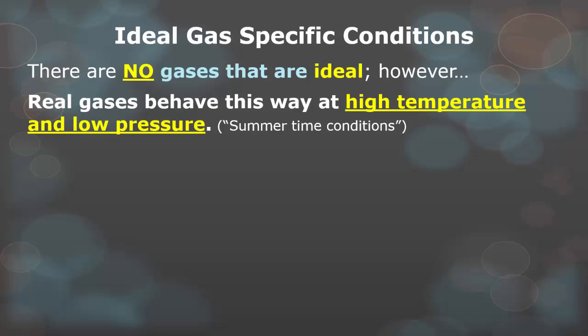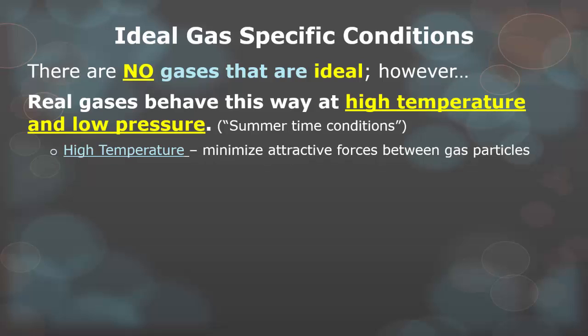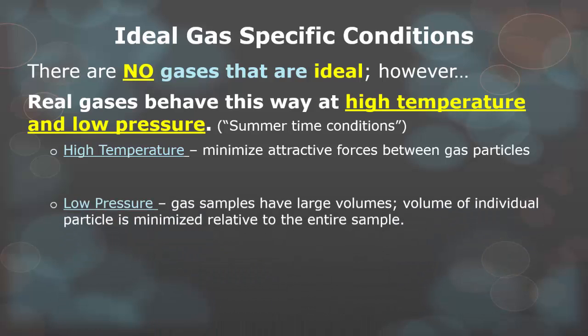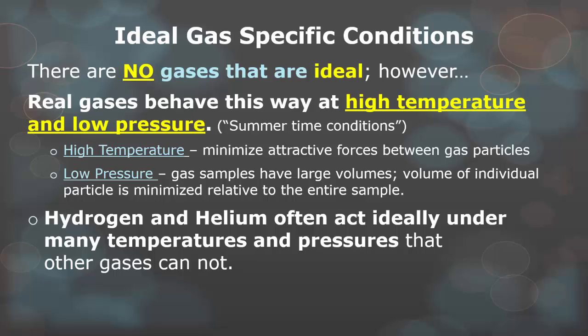There are no gases that are actually ideal. However, real gases behave this way at high temperatures and low pressures — think summertime conditions: out of school, very little pressure, but nice warm temperatures. High temperature minimizes the attractive forces between gas particles because they are moving so fast. Low pressure is required because gas samples have large volumes and the volume of individual particles is minimized relative to the entire sample. Hydrogen and helium often act ideally under many temperatures and pressures that other gases cannot, so if asked which two gases are most ideal, hydrogen and helium would be the answer.